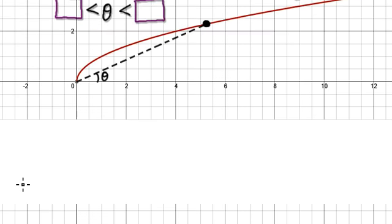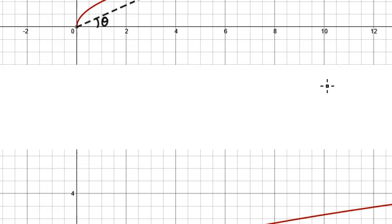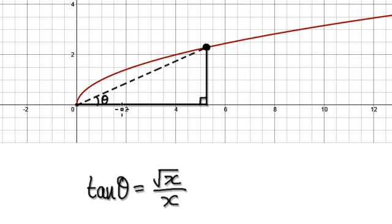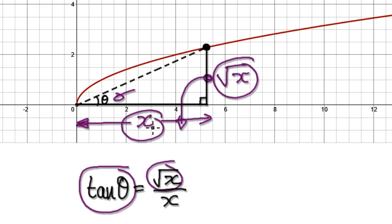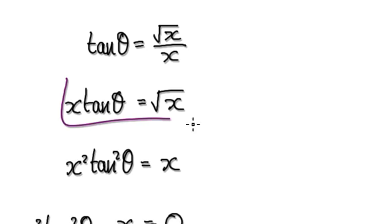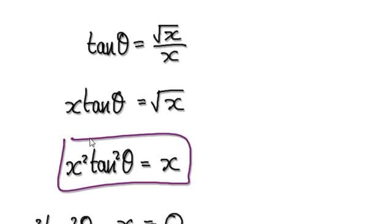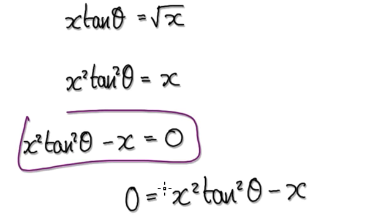To do this — remember, this is a graph of y = square root of x. The secret to doing this is to call this length here x. So let's say this length here is x, then the height here must be root of x. Once you've got this, you can make the statement: if you tan the angle, it will be opposite over adjacent. Now, times both sides by x — that will take you here. Then square both sides — that will take you here. Take away x from both sides — that will take you here. Let me tidy this up and rewrite it.